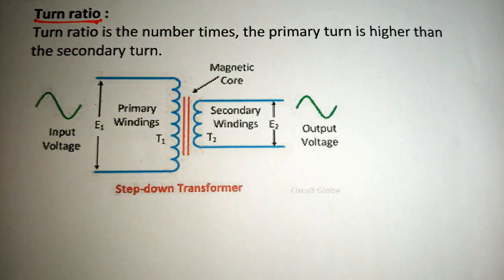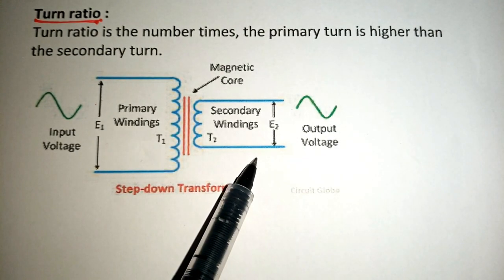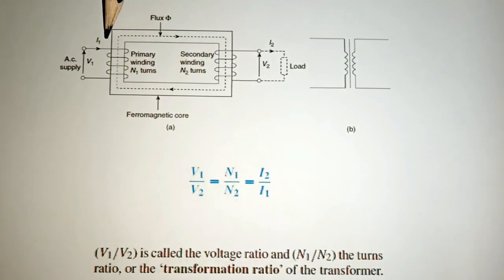Turn ratio is the number of times the primary turn is higher than the secondary turn and as we all know, in transformers, the higher the turn, the higher the voltage and that simply means that the primary turn would always have a high voltage relative to the secondary turn.